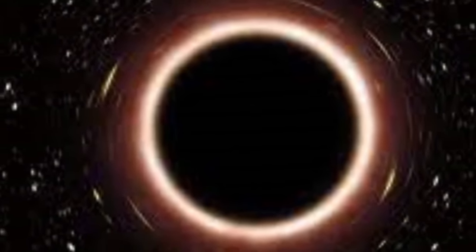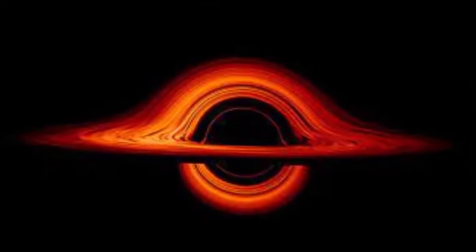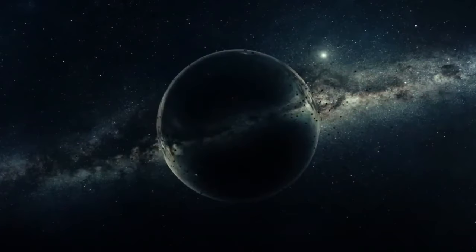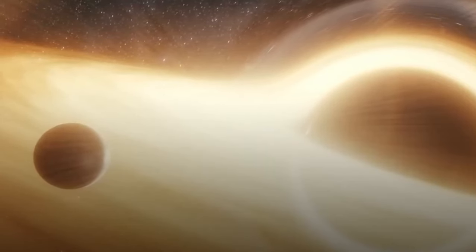One celestial body that stands out is Triton, Neptune's peculiar moon. It has an unusual characteristic: its orbital motion is retrograde, meaning it orbits in the opposite direction to the planet's rotation. This peculiarity has led scientists to speculate that Triton might have originated from the Kuiper belt and was captured by Neptune's gravity. The exact method of how this occurred remains a mystery.